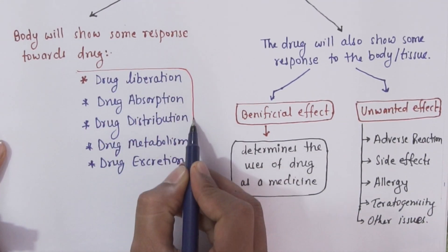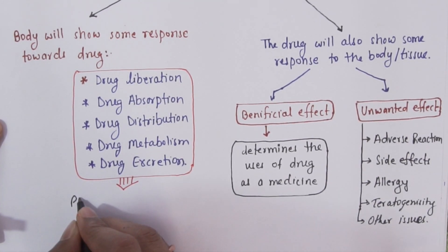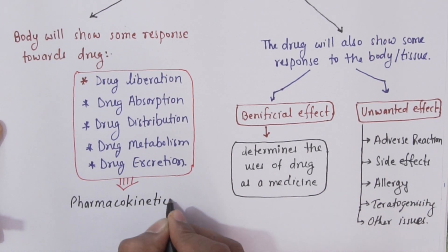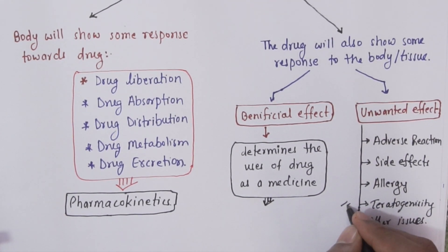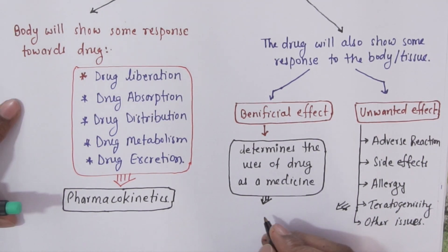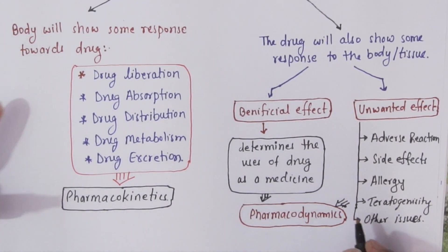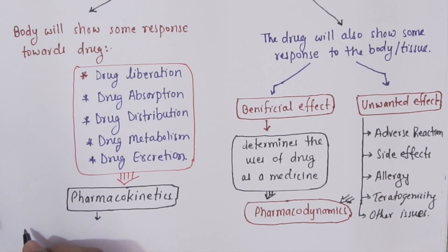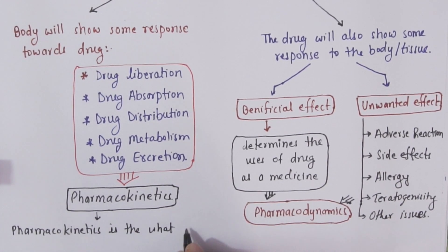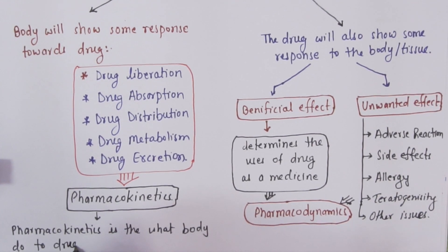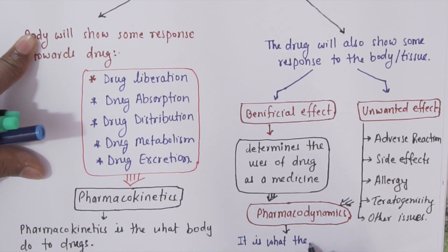Now if you will see, all the activities which body does to the drug is called pharmacokinetics, which includes LADME—liberation, absorption, distribution, metabolism, and excretion. Similarly, all the activities which drug does to the body is called pharmacodynamics. So pharmacokinetics is what body does to the drug, whereas pharmacodynamics is what the drug does to the body.